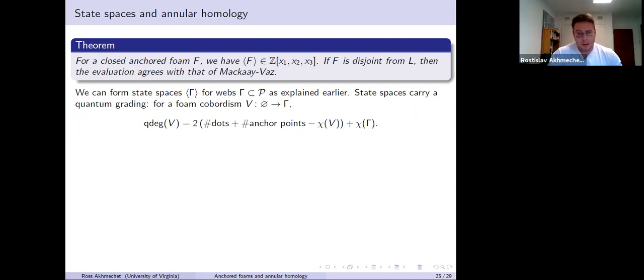We can form state spaces bracket gamma for these webs in the punctured plane. Similar to the SL2 story, we have bi-gradings. There's a quantum grading given by this formula here. The state space is spanned by these foam cobordisms from the empty web to gamma. For such a cobordism, there's this formula for the quantum grading. This descends to the state space, which is a quotient. This is kind of similar to what has appeared in the literature, except without this contribution of anchor points.